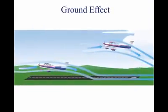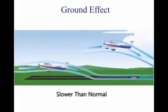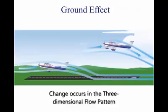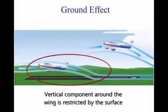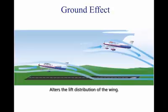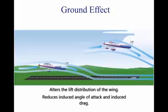Ground effect is a phenomenon that allows an aircraft to fly slower than normal a few feet from the ground. When an aircraft in flight comes within several feet of the surface, ground, or water, a change occurs in the three-dimensional flow pattern around the aircraft, because the vertical component of the airflow around the wing is restricted by the surface. This alters the aerodynamics of the wing mainly, though the fuselage and tail surfaces are also affected. The reduction of wingtip vortices due to ground effect alters the lift distribution of the wing and reduces the induced angle of attack and induced drag. Therefore, the wing will require a lower angle of attack in ground effect to produce the same lift.